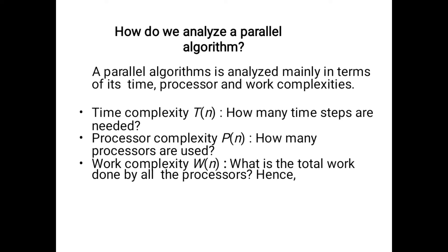How do we analyze a parallel algorithm? The parallel algorithm is analyzed mainly in terms of its time, processor, and work complexities. Here the time complexity is shown as T(n) — how many time steps are needed. The processor complexity is P(n) — how many processors are used. For the work complexity we use W(n) — what is the total work done by all processors.